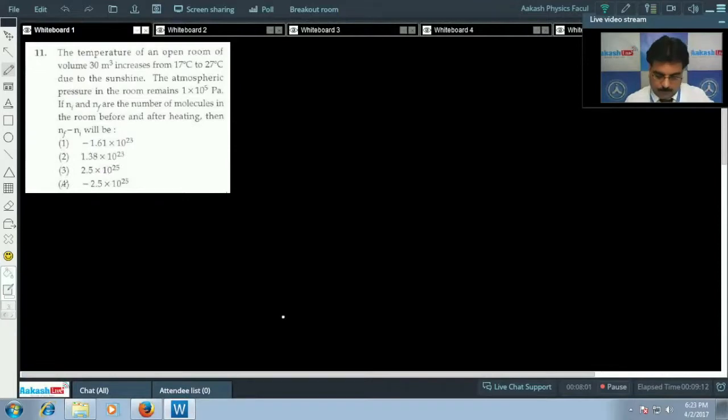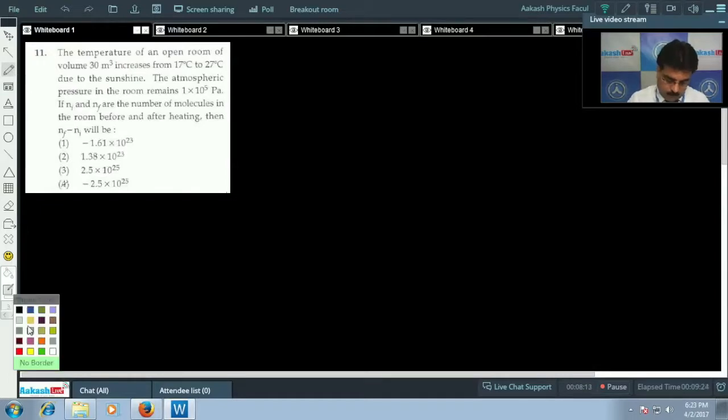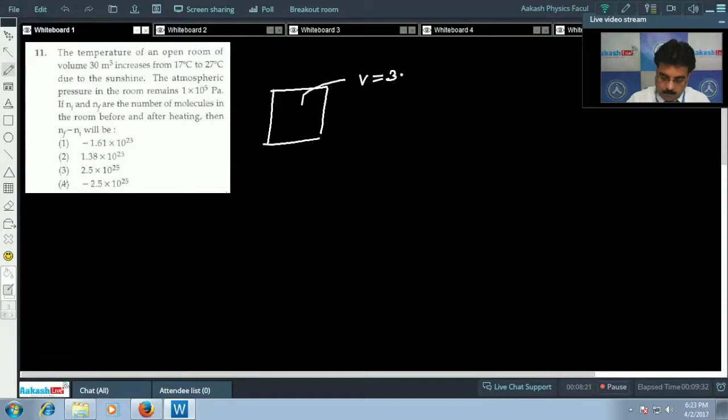Now we are going to solve question number 11. The temperature of an open room with volume 30 meter cube increases from 17 to 27 degrees centigrade. So if this is a room with volume 30 meter cube and initial temperature in Kelvin is 290 Kelvin, the final temperature will be 27 degrees centigrade, which we can write as 300 Kelvin. But look at the question - it asks for the number of molecules in the room before and after heating.